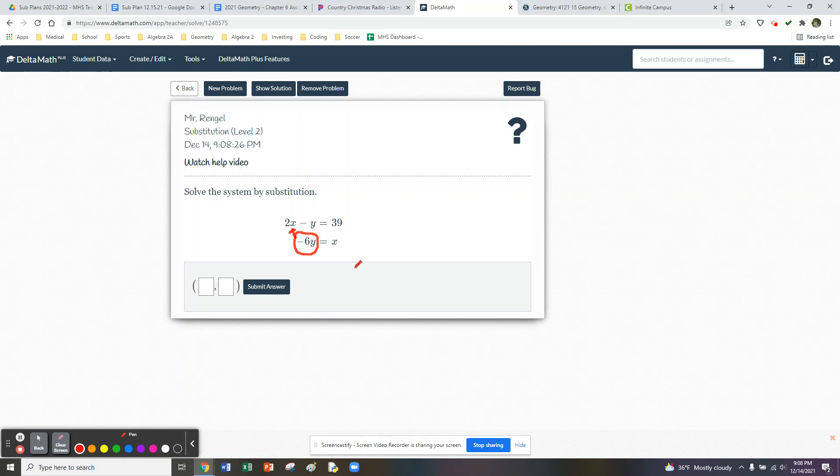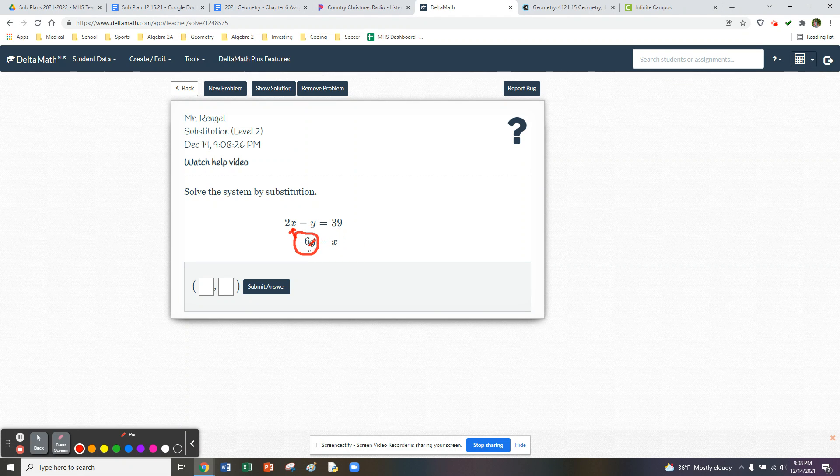In lesson 21, we solve systems by using substitution. We're going to find the equation that's got a single variable, so x equals negative 6y.